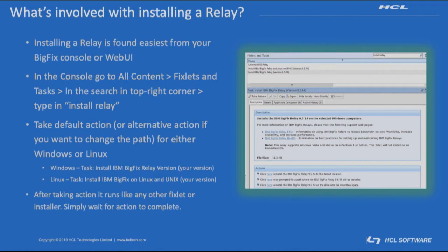To install a relay, the easiest way is by using your BigFix console or the web UI and searching for install relay. In the console, I usually recommend going to all content, fixlets and tasks in the top left of your tree, and then in the search box in the top right corner, type in install relay. Take the default action if you want to install it on the same pathing as the agents. If you don't want to do that, there is also alternative pathing that you can use — it's an alternative send of that action.